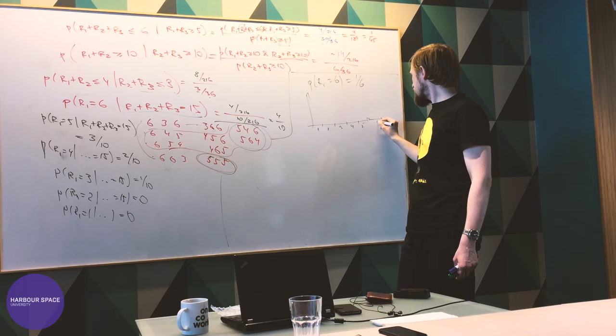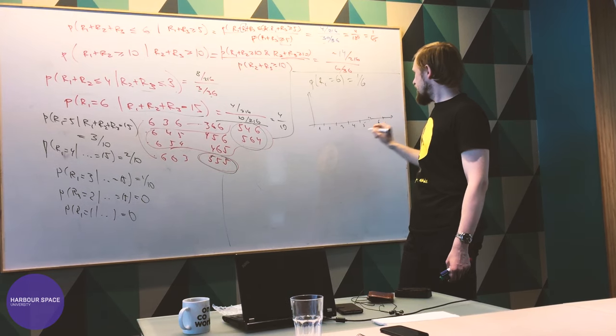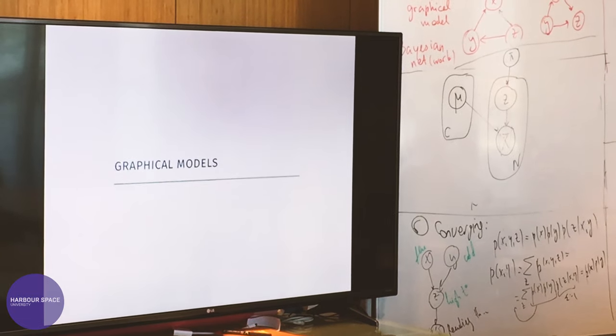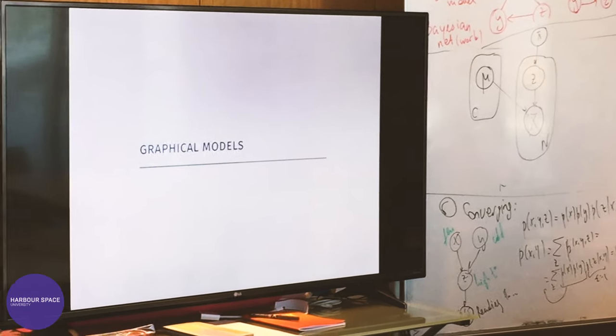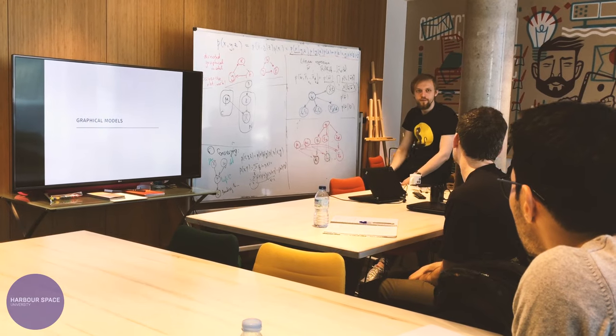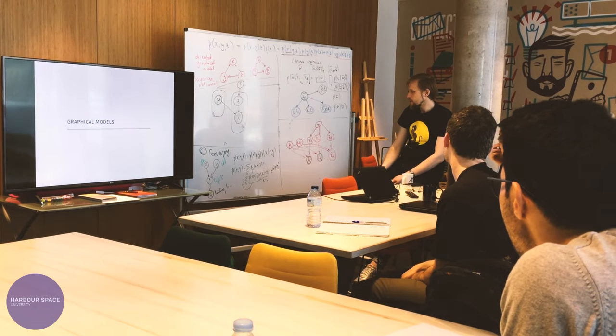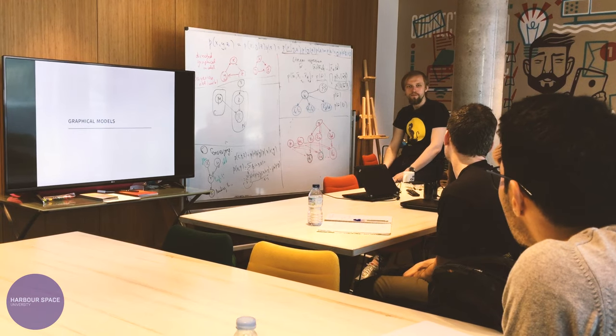We begin with the fundamentals. We begin with the whole Bayesian inference and the Bayesian framework and the Bayesian view of machine learning, and then we proceed to specific models, to specific approaches and algorithms. The course is roughly broken up into three parts: basic models, graphical models, and deep learning.